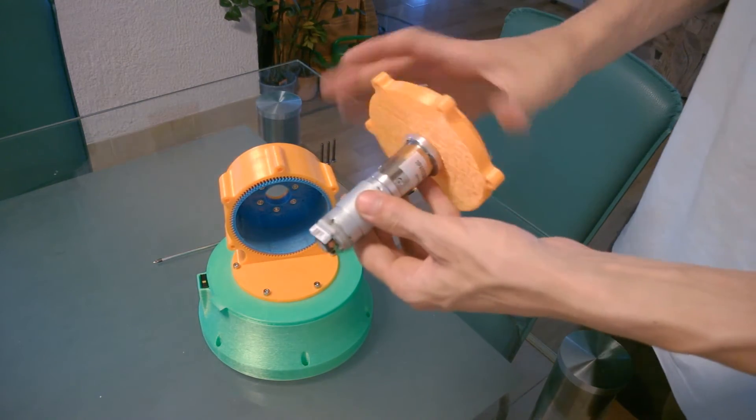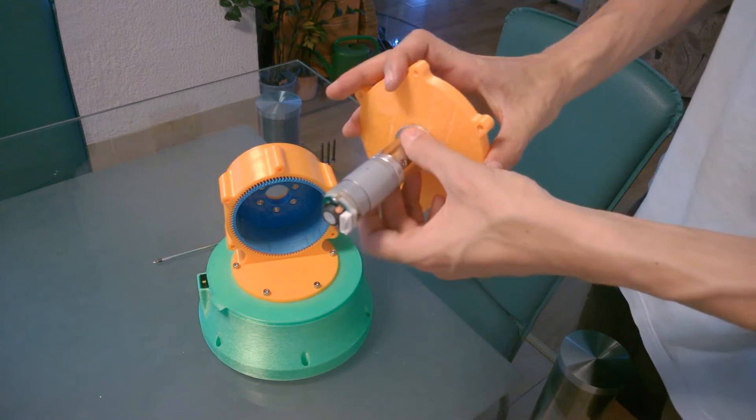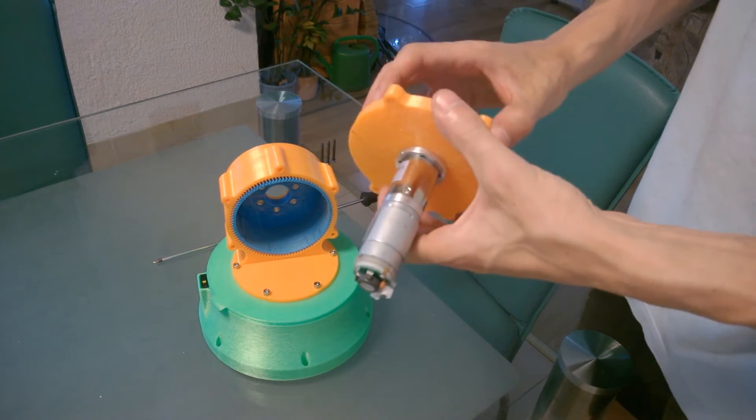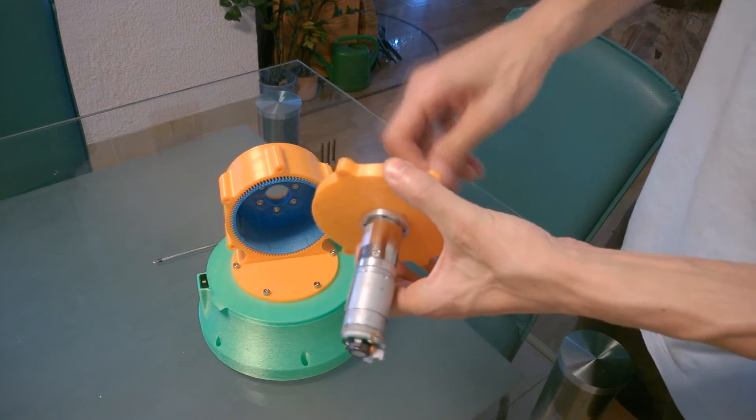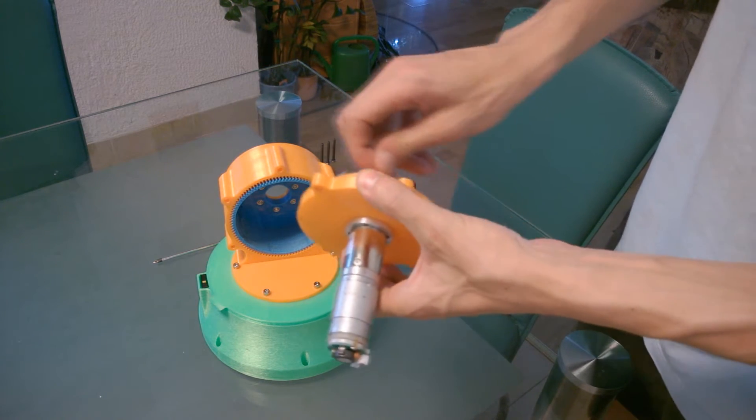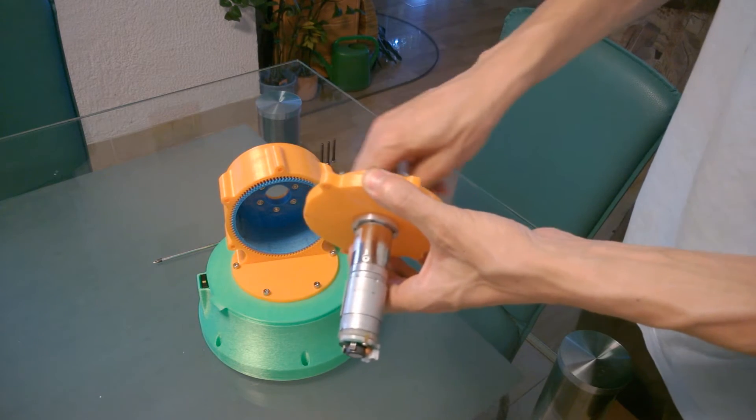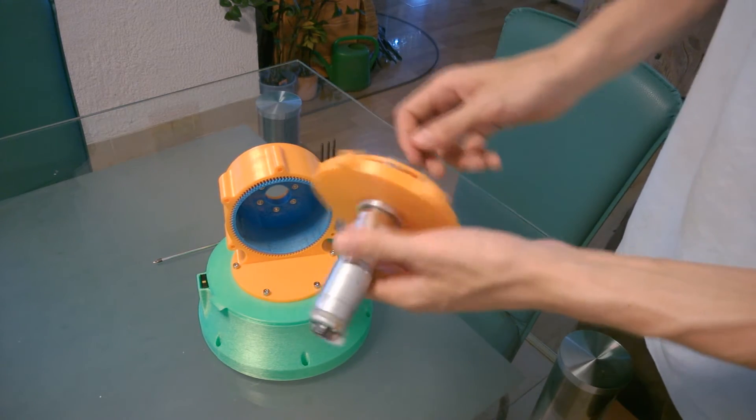I'm using this electric DC motor with a gearbox. It's a little slow because the shaft only rotates 150 RPM at 12 volts.